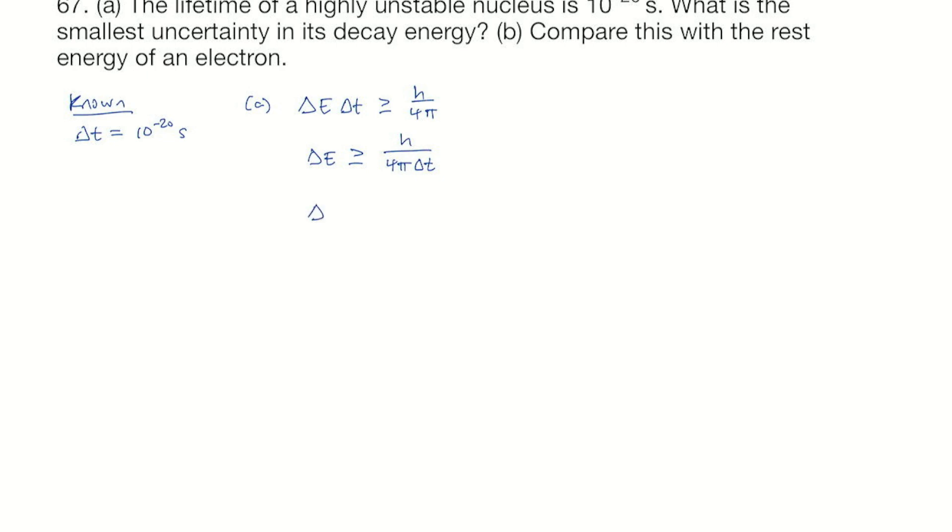The uncertainty in the energy is greater than or equal to H, which is Planck's constant, 6.626 times 10 to the minus 34 joule seconds. We're going to divide that by 4 pi, and we're going to multiply the 4 pi by 10 to the minus 20 seconds. So delta E is greater than or equal to 5.27 times 10 to the minus 15 joules.